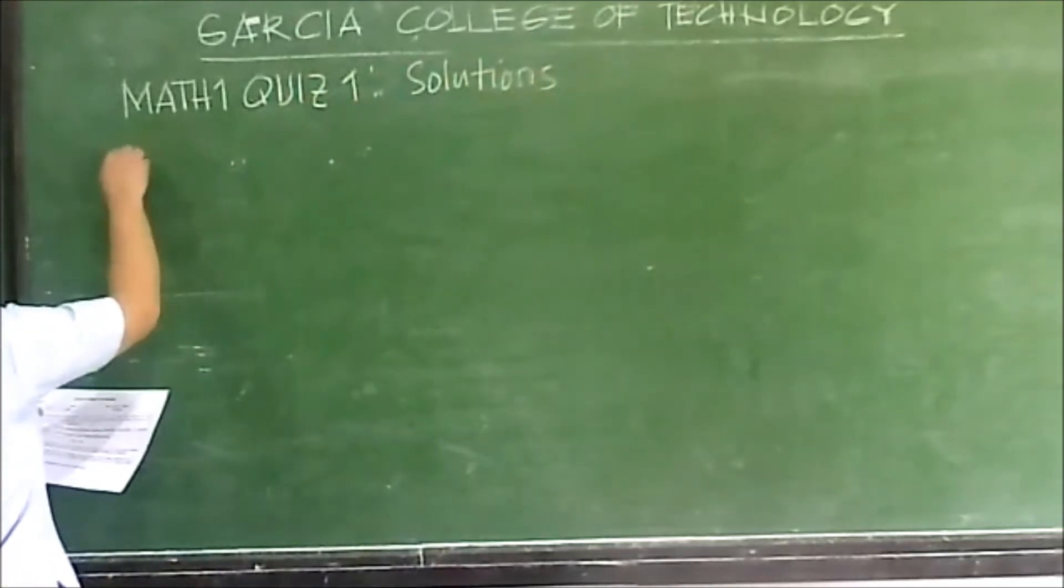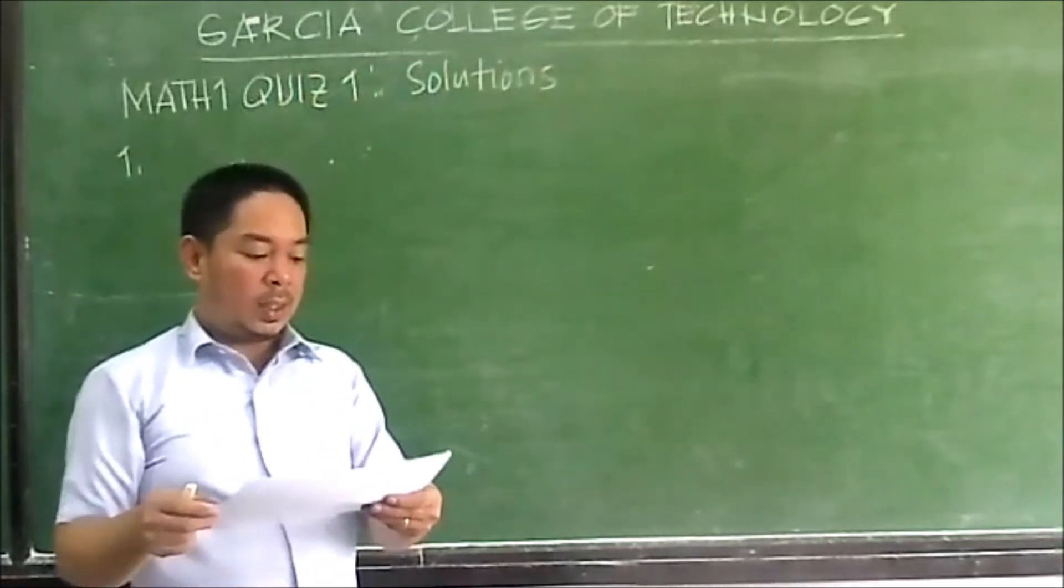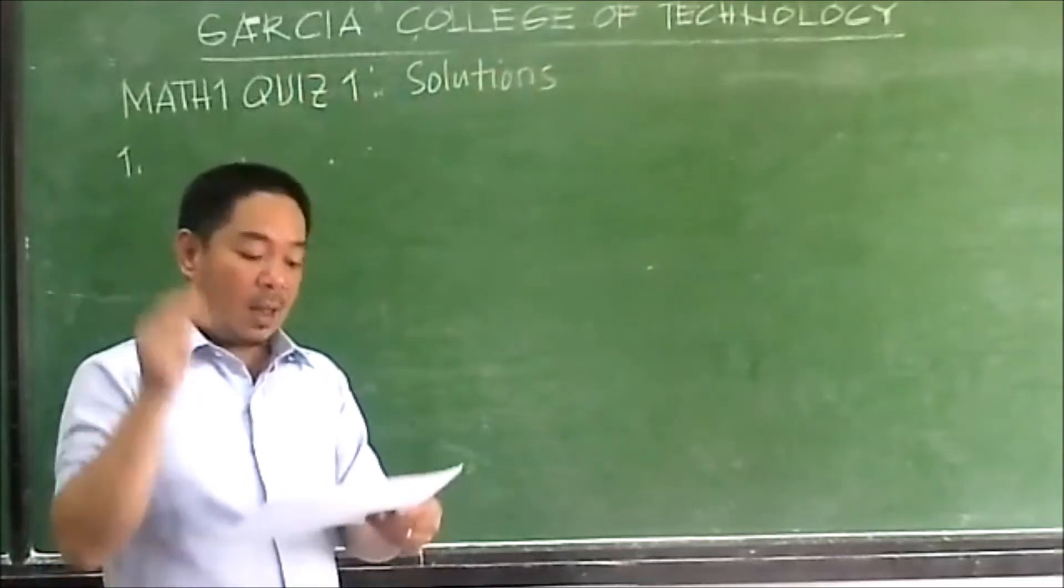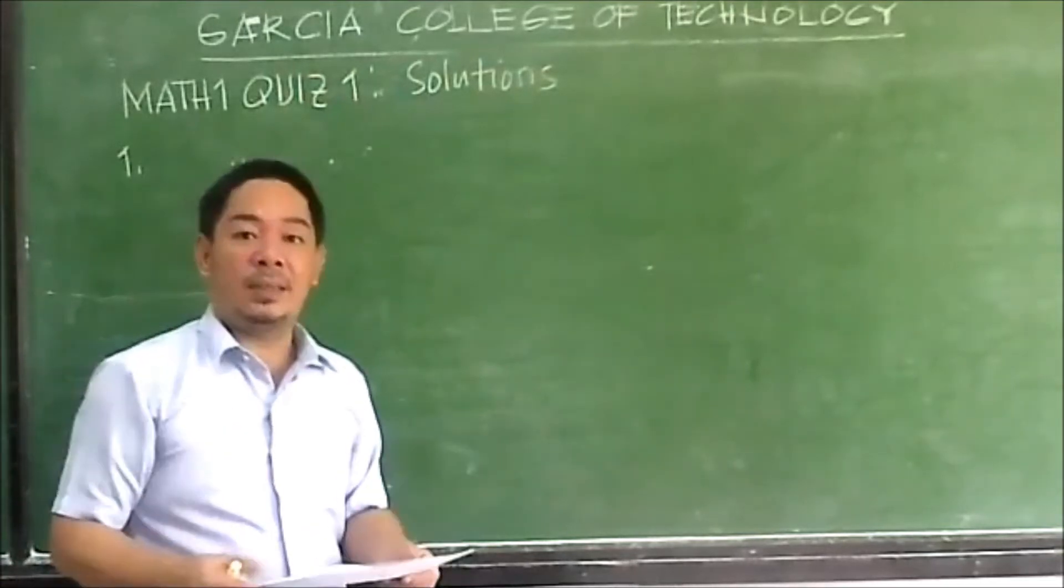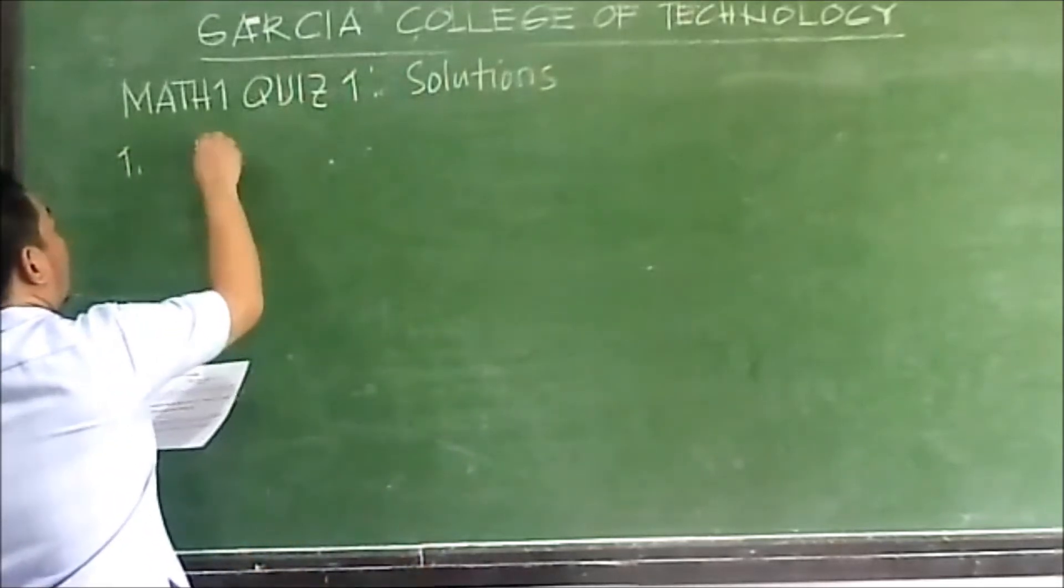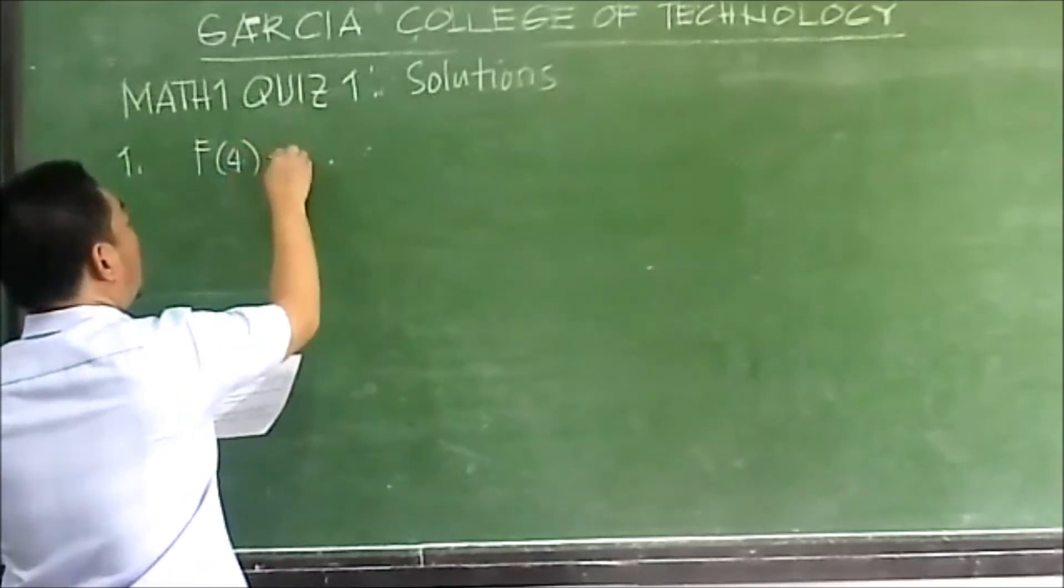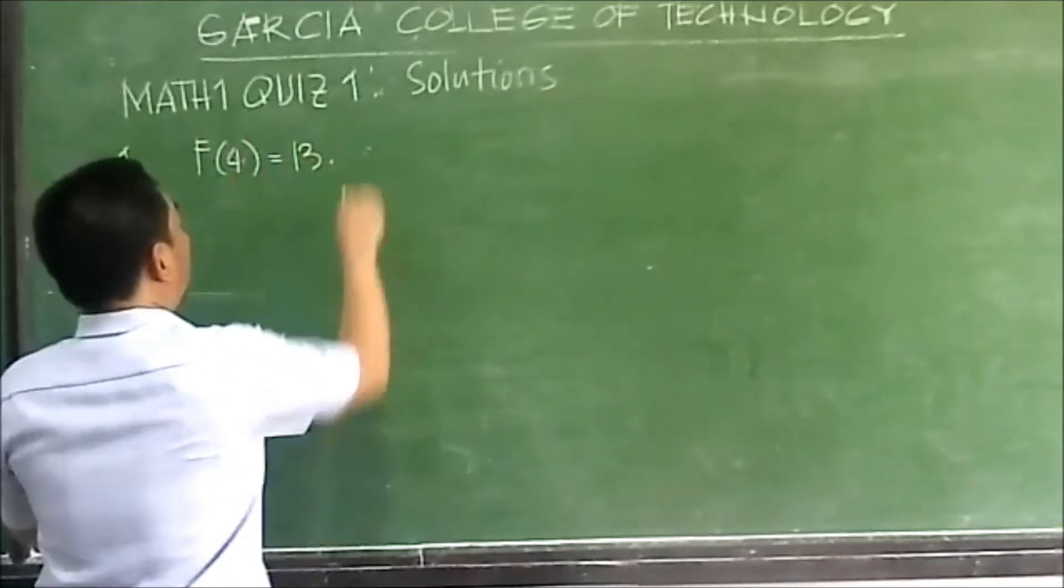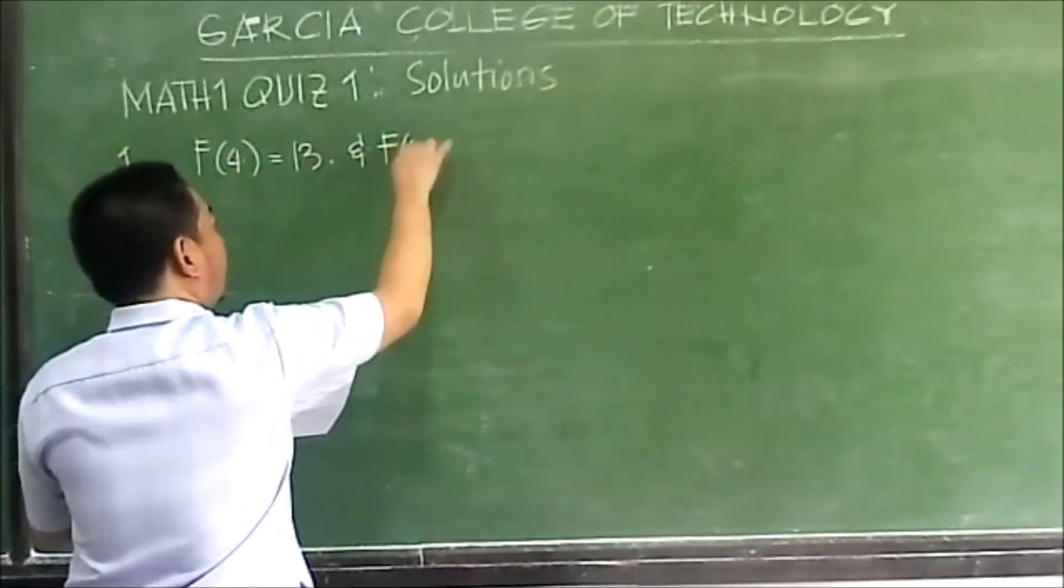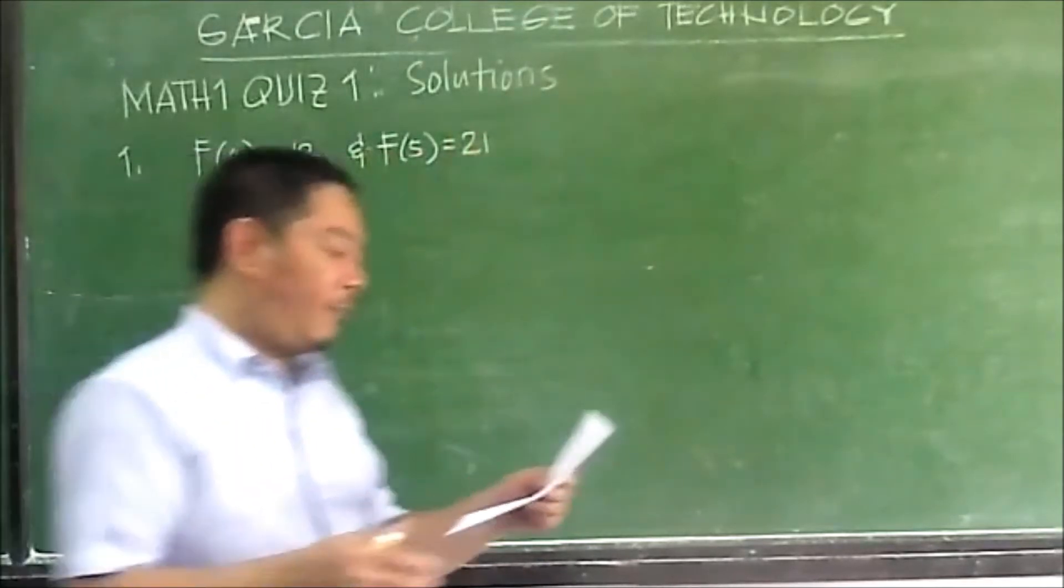Number 1. So I'll read the question. If the given sequence follows the Fibonacci sequence, with F4 equals 13 and F5 equals 21, find the following.